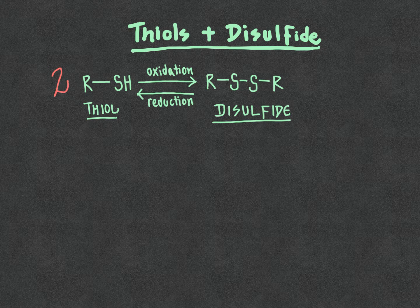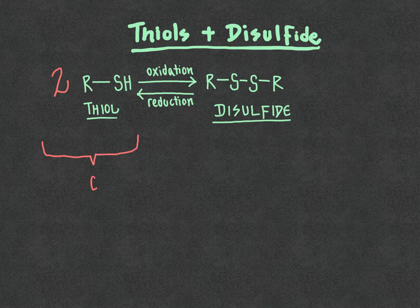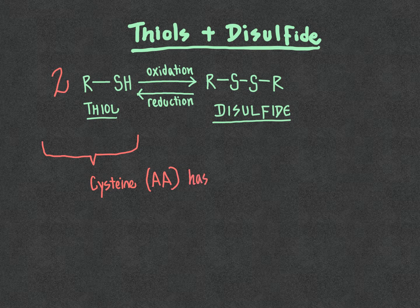The thiol functional group is found within one of the 20 amino acids that are the building blocks of proteins. Specifically, cysteine — one of the 20 amino acids, abbreviated as AA — has a thiol group. Proteins are abundant in human hair, and one of the amino acid building blocks of those proteins found in human hair is the cysteine residue.